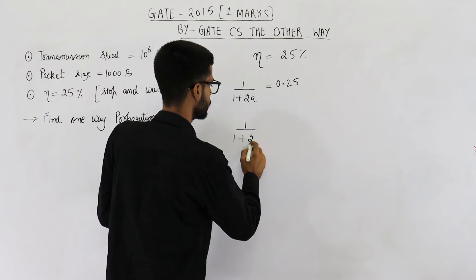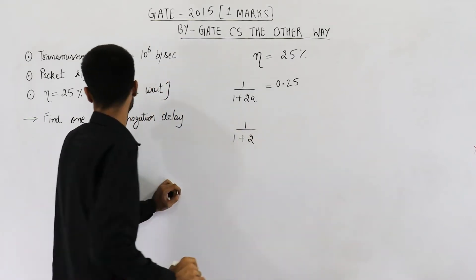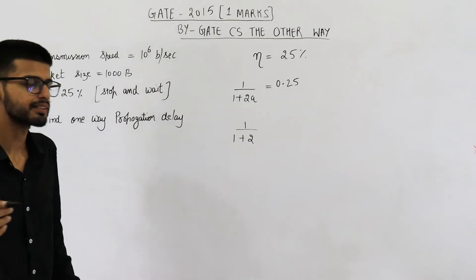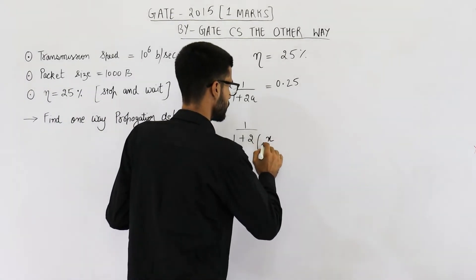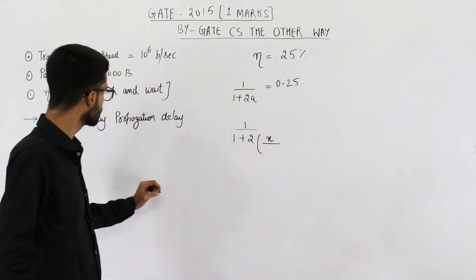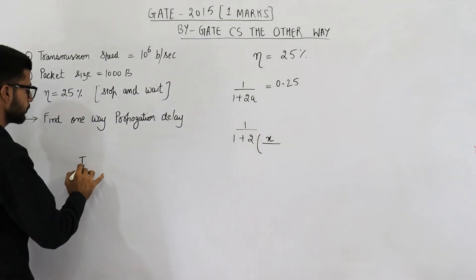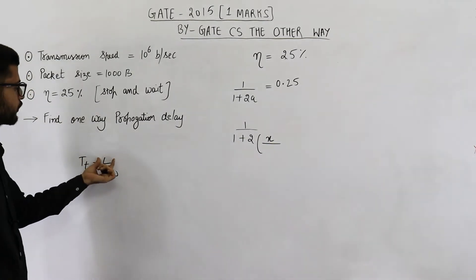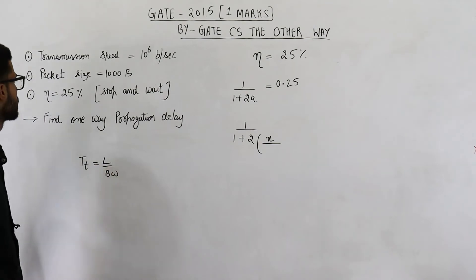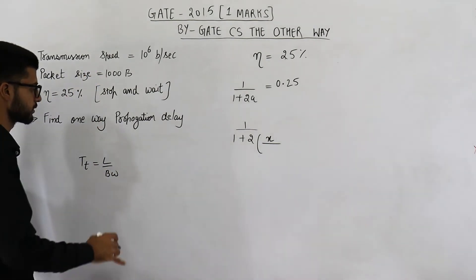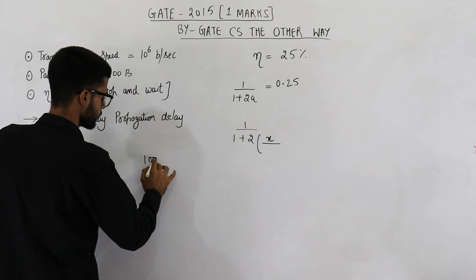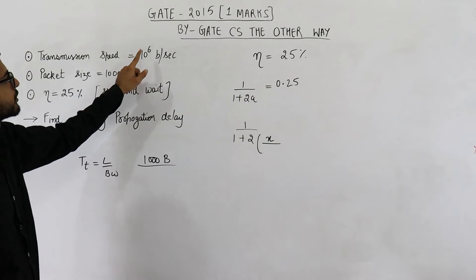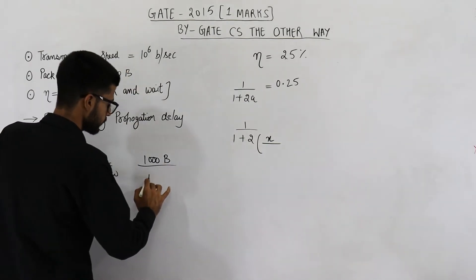So we have 1 upon (1 + 2 × tp/tt) = 0.25. Since tp is not given, let us assume propagation delay is x, so it will be x upon tt. Transmission delay tt is also not directly given, but the formula for tt is L upon bandwidth — that is, length of packet divided by bandwidth. Packet size is given as 1000 bytes, divided by bandwidth which is 10^6 bits per second.